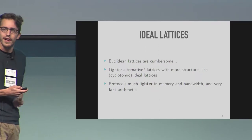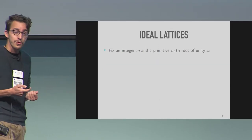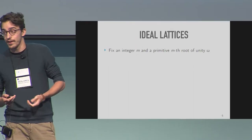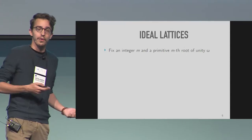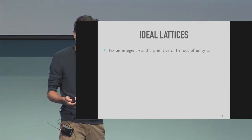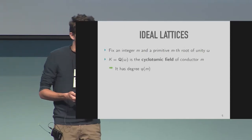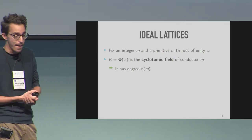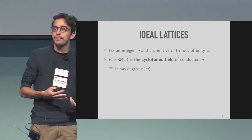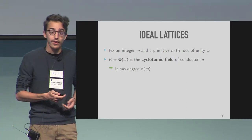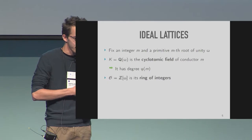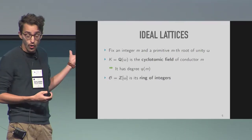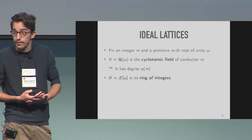So what are cyclotomic ideal lattices? For the rest of the talk, I'm going to fix an integer m together with a primitive m-th root of unity omega — a complex number which raised to the power m is 1. I define the field k to be Q adjoint omega, the cyclotomic field of conductor m. It is a number field of degree phi of m, where phi is the Euler totient function. This field k contains a sub-ring z brackets omega, which I write O, the ring of integers of this field.